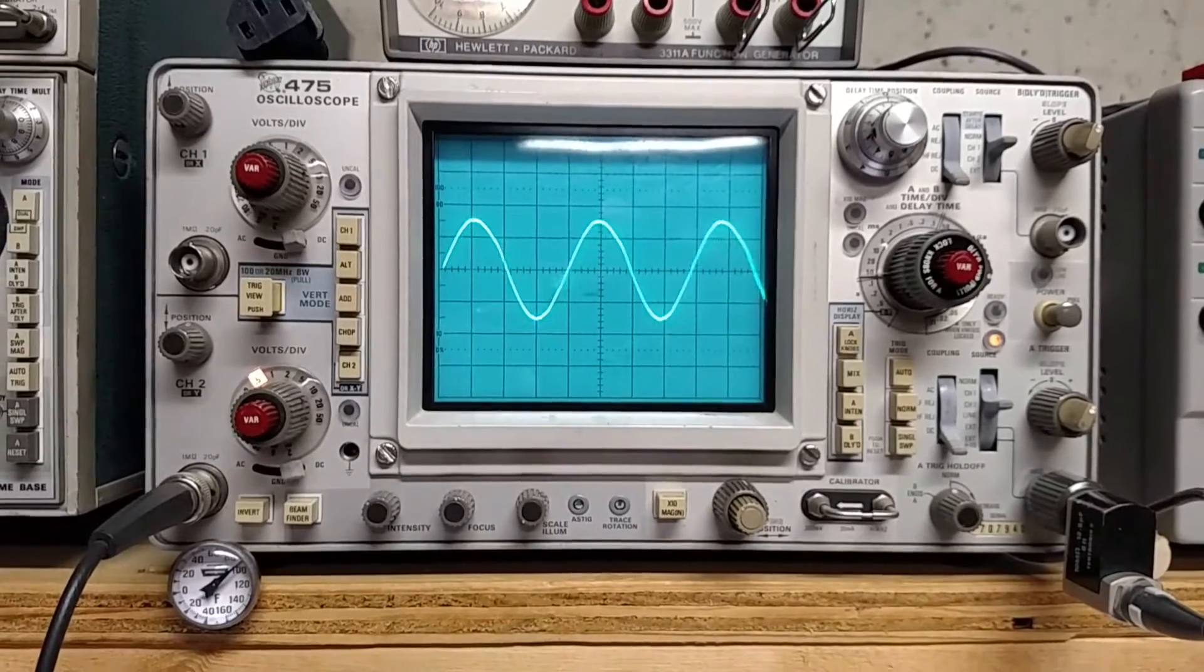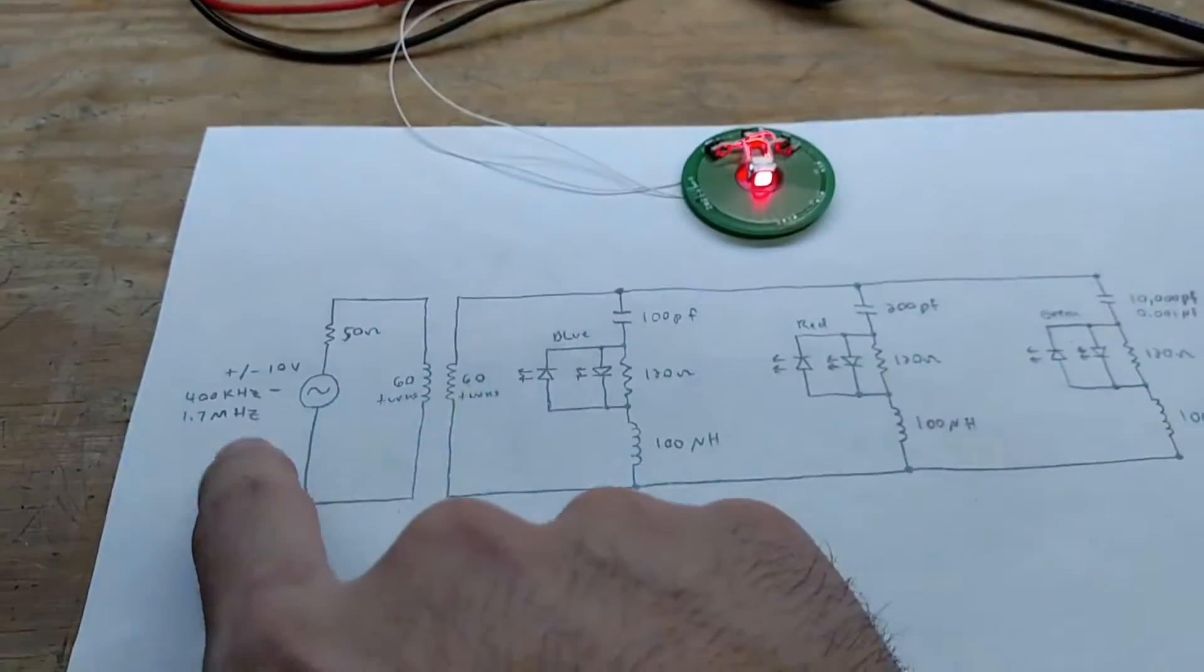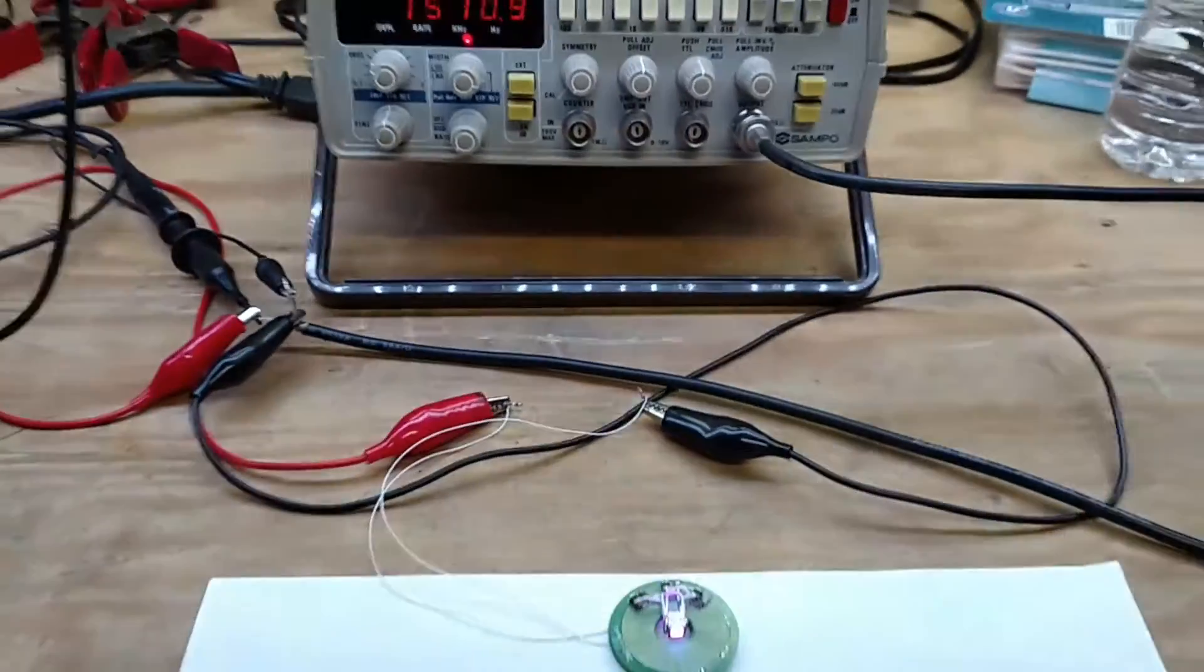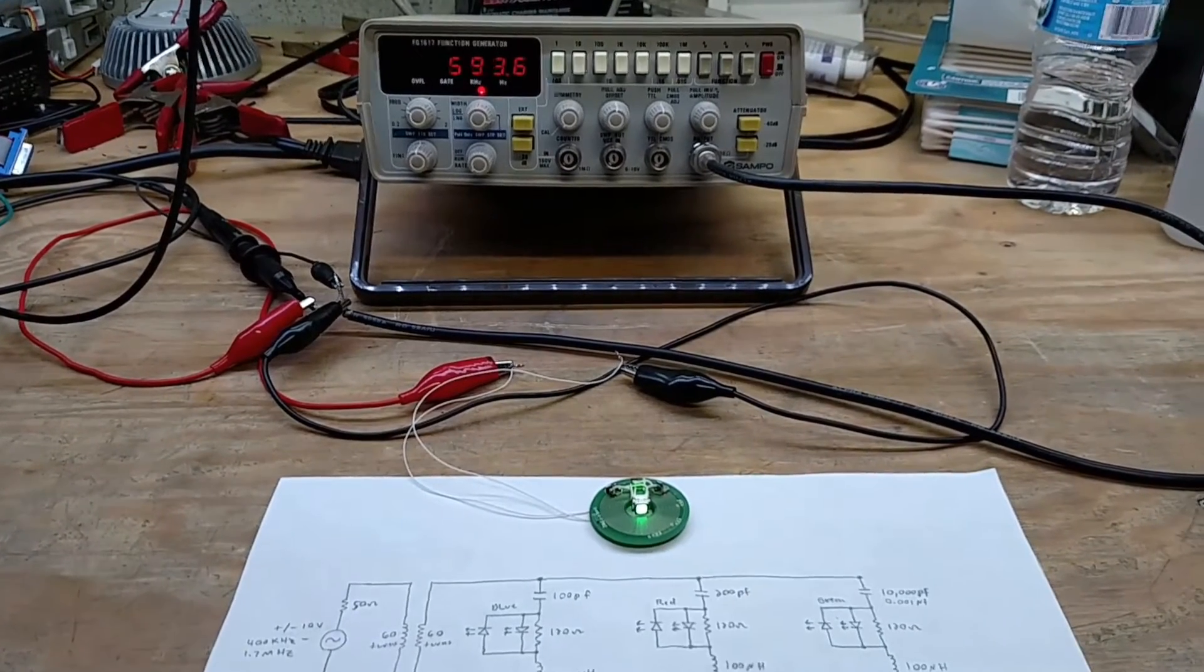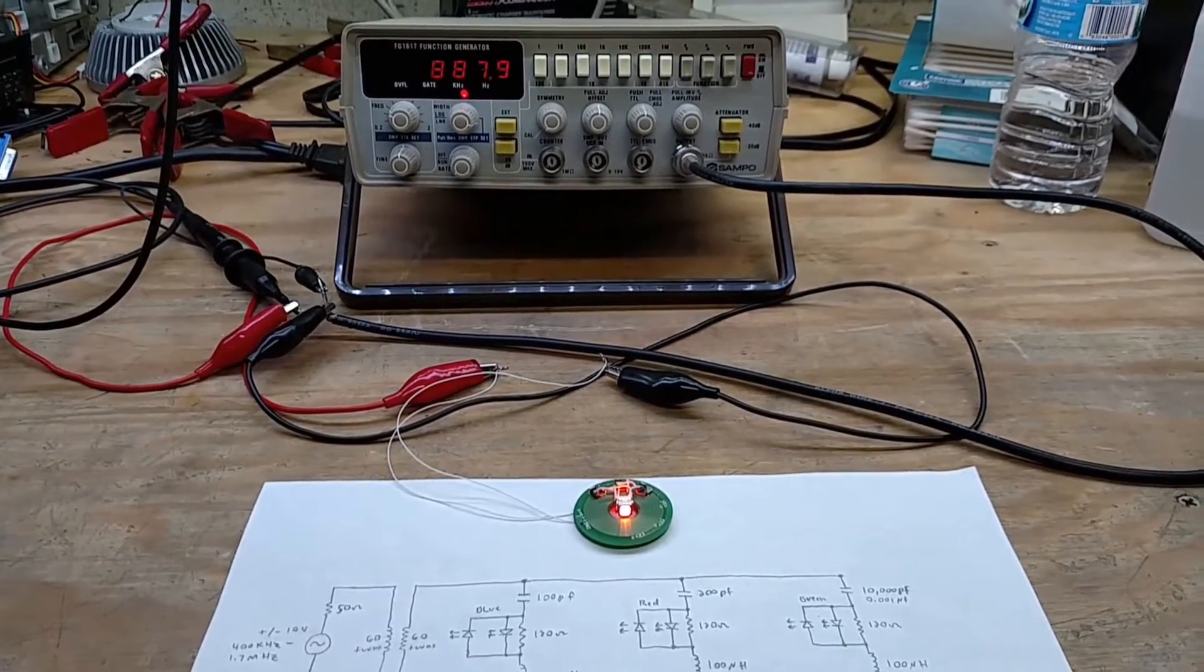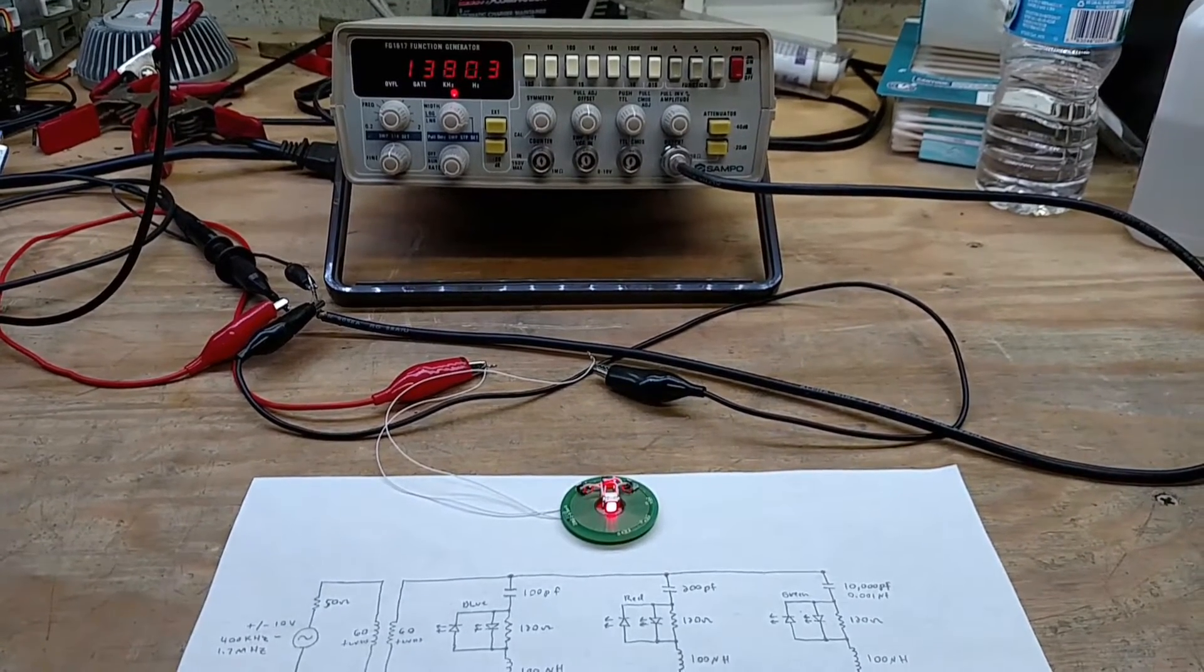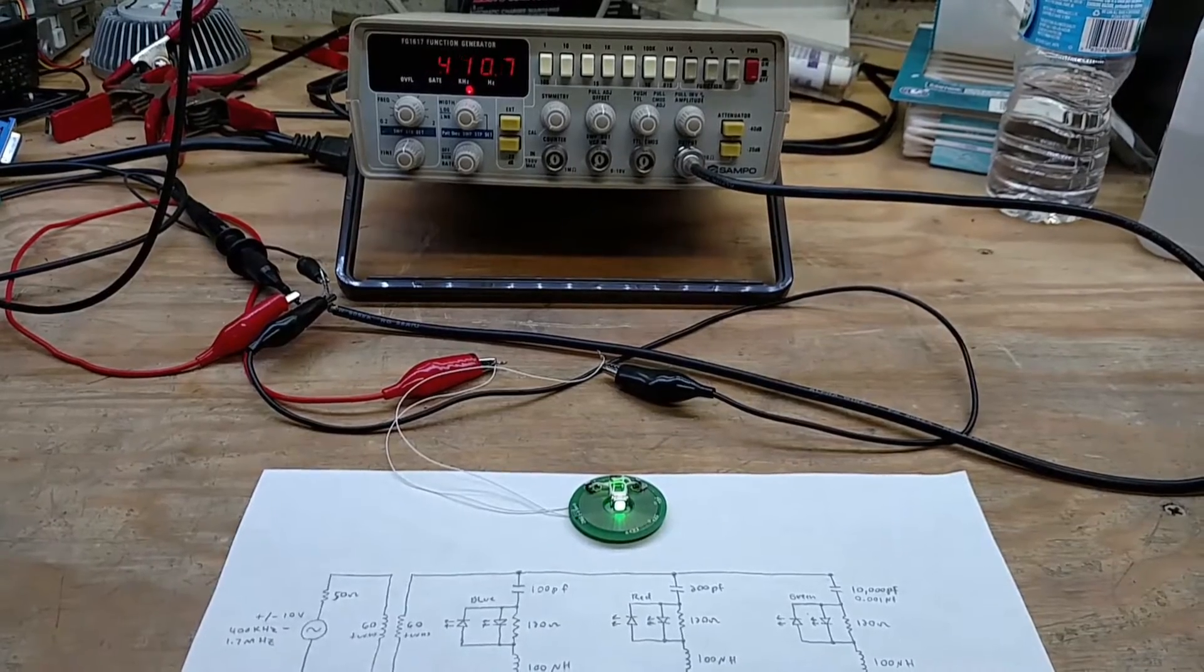I have it sweeping between 400 kilohertz and 1.7 megahertz. If you watch the frequency, you'll see it corresponds to the color of the LED as it cycles through. I'll record that for a bit so you can see it go back to green.